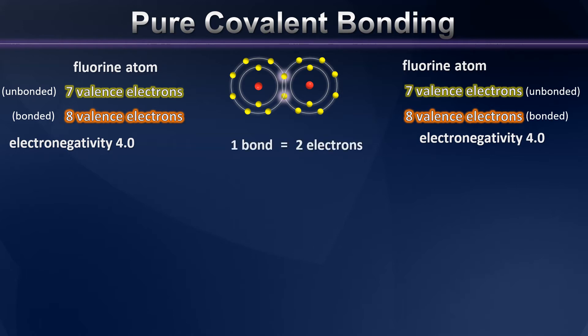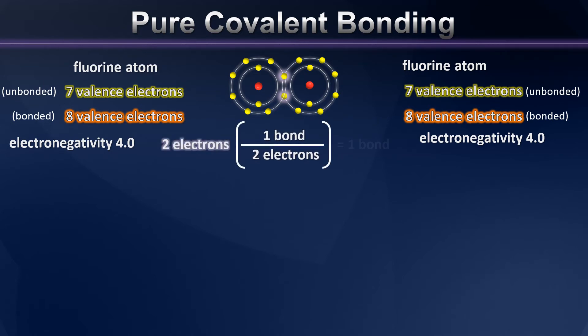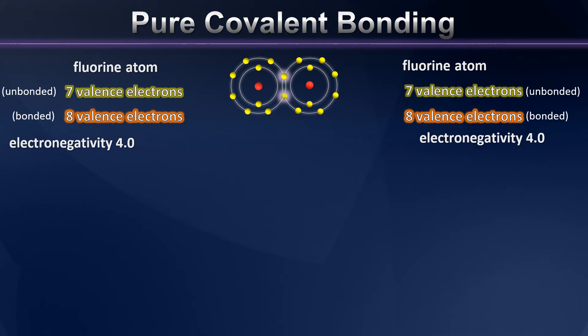And because we know that it takes two electrons to make one chemical bond, some simple math leads us to the conclusion that molecular fluorine should have a single bond. So when we draw molecular fluorine, for example, as Lewis structures or ball and stick models, we always do so with one line connecting our two atoms, indicating that the molecule is joined by a single bond.